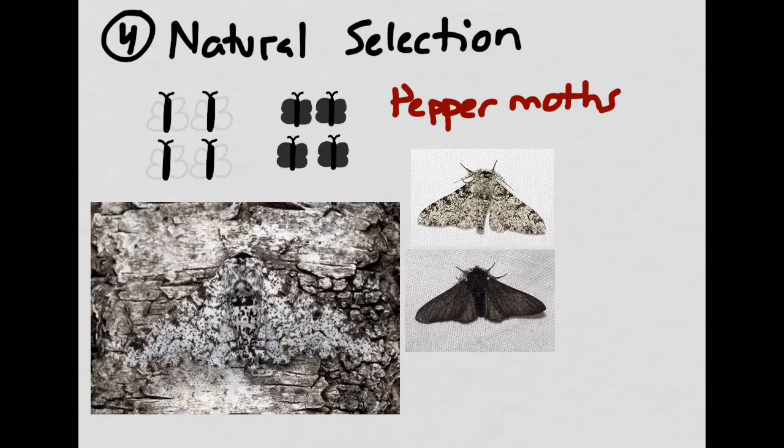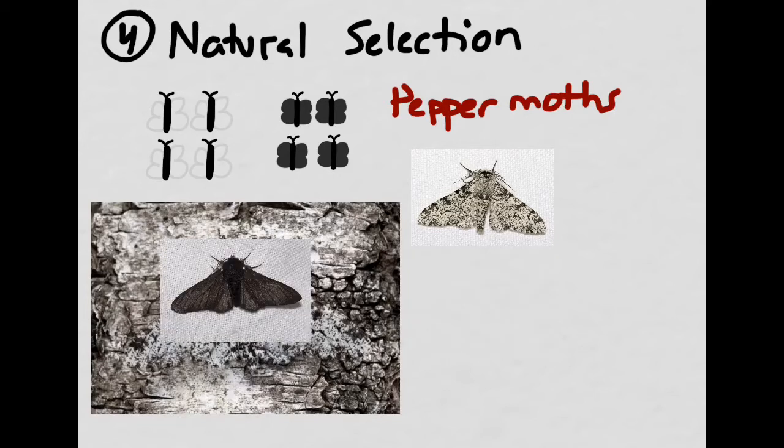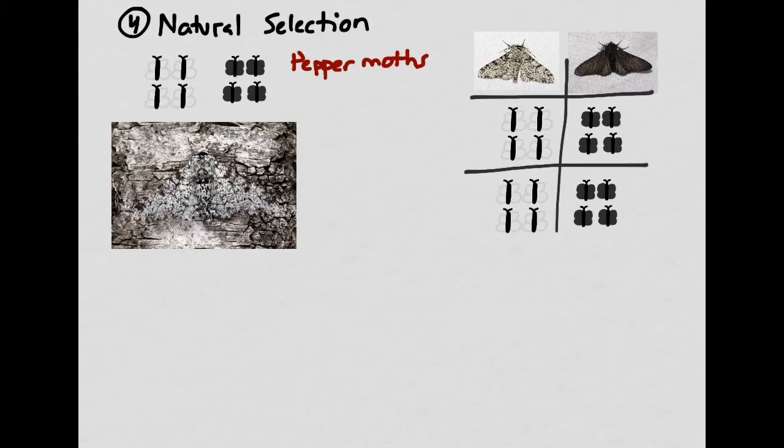Every once in a while there would be a mutation, and a dark-colored pepper moth would be produced just by random chance. So you can see that this pepper moth would stand out pretty significantly against the light-colored bark of the trees, and so it probably wouldn't survive long enough to reproduce. I've made myself a little table here. And it's important to put this into context in terms of time and place.